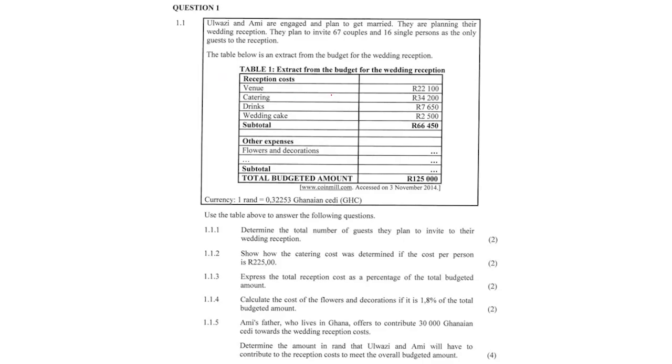Wazi and Amy are engaged and planning their wedding reception. They plan to invite 67 couples and 16 single persons as guests. The table below is an extract from the budget for the wedding reception. The reception costs total 66,000 rand, and there are other expenses as well. The subtotal and final total is 125,000 rand. So this 66,000 plus the other costs gives us 125,000.